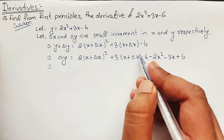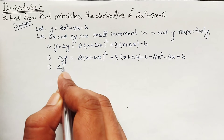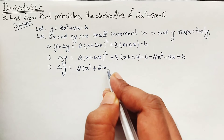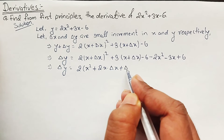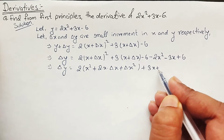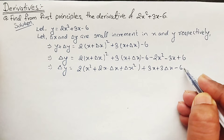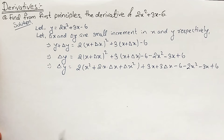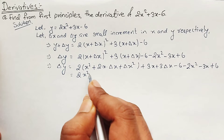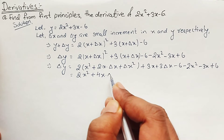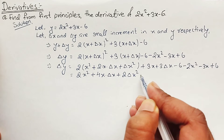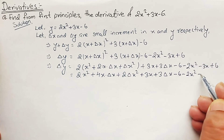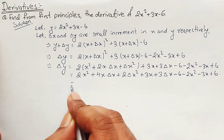Now we open up the squared term. Delta Y equals 2x squared plus 4x·Delta X plus 2·Delta X squared plus 3x plus 3·Delta X minus 6 minus 2x squared minus 3x plus 6.